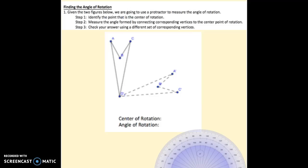I'm going to start by trying to identify where my center of rotation is. I'm going to do that by looking at my pre-image, which is A, B, C, D, and looking at my image A prime, B prime, C prime, D prime.